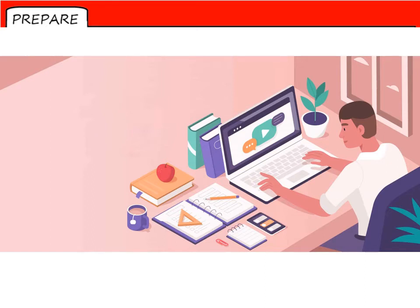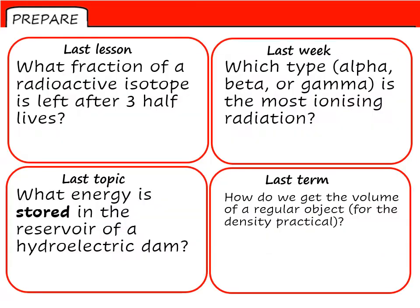Hello and welcome to another edition of remote learning in physics. Let's begin with retrieval practice. Number one: what fraction of a radioactive isotope is left after three half-lives? Number two: which type — alpha, beta, or gamma — is the most ionizing radiation? Number three: what store of energy is found in the reservoir of a hydroelectric dam? Number four: how do we find the volume of a regular object as found in the density practical? Pause while you attempt, and play when you're ready for the answers.